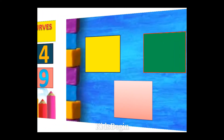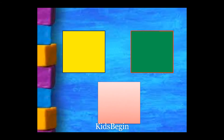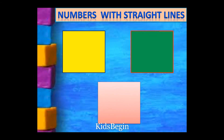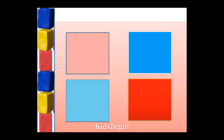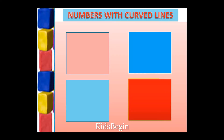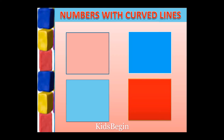Let us find out the numbers with straight lines: 1, 4, and 7.